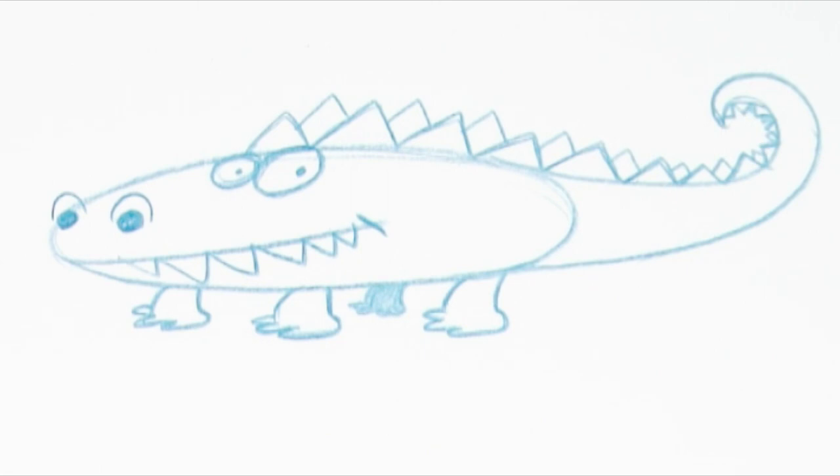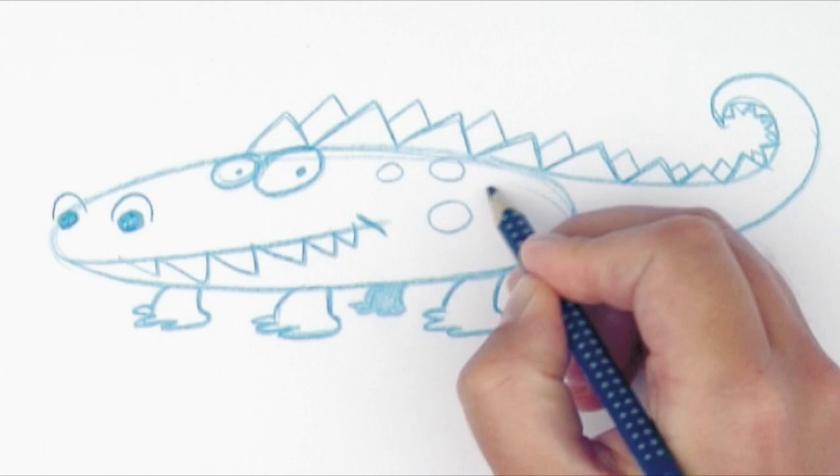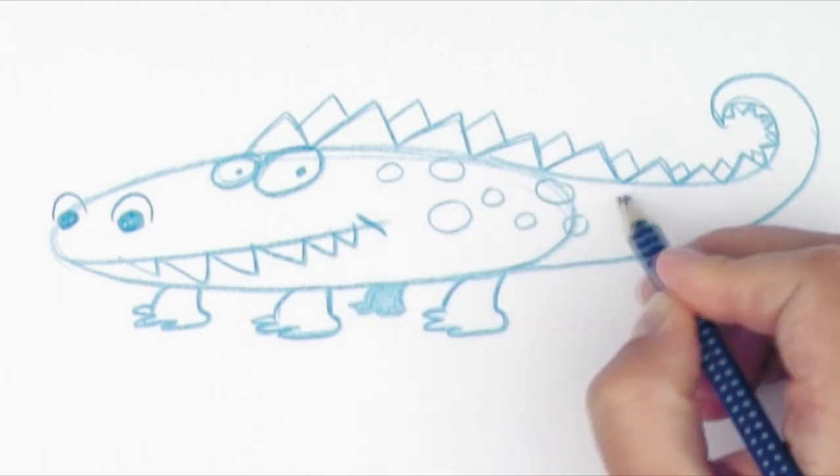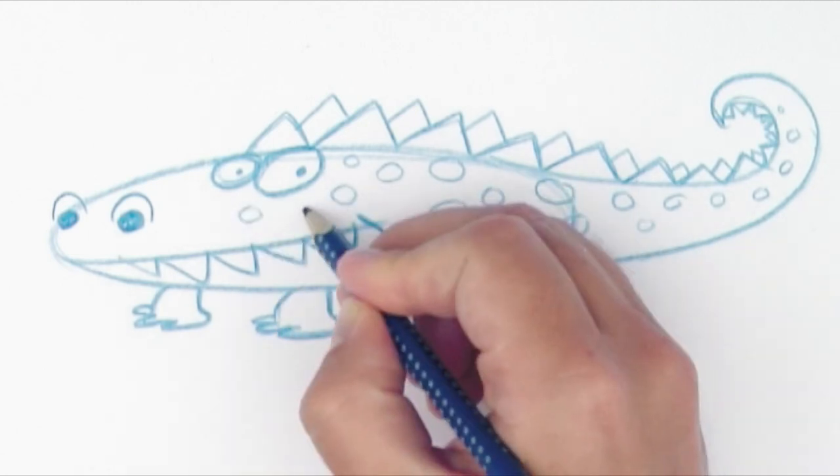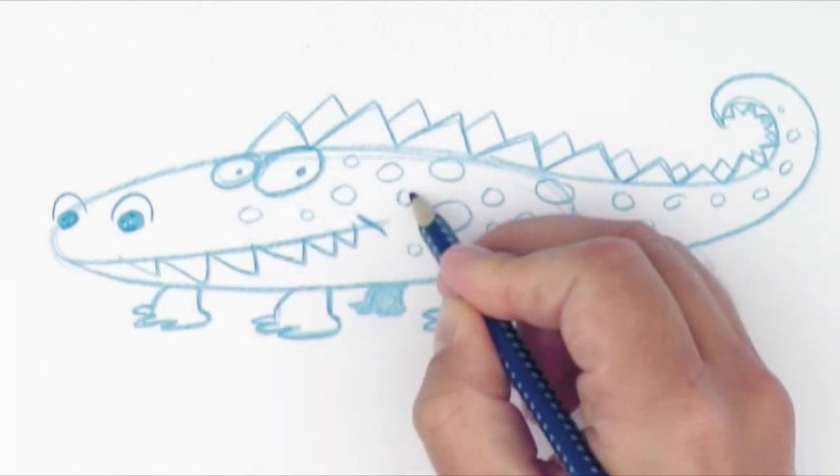If you see a crocodile very close, you'll see that the skin is full of small shells that looks like circles. Therefore, I draw some circles with different sizes. So what do you think? Does it look like a real crocodile now?